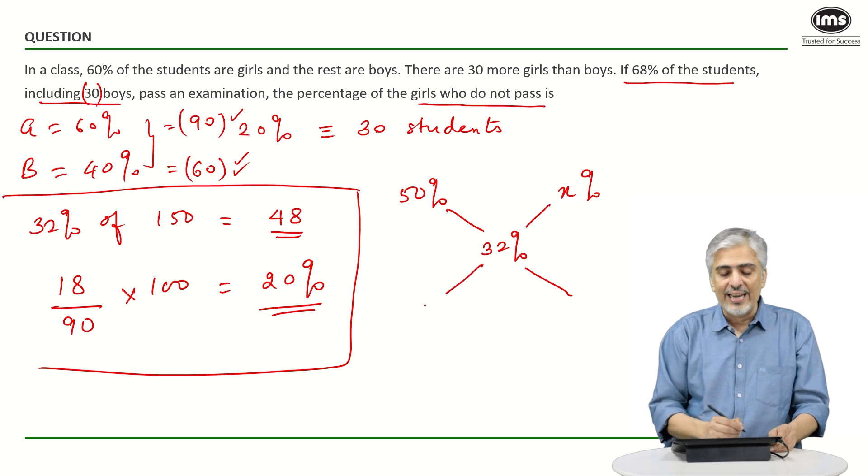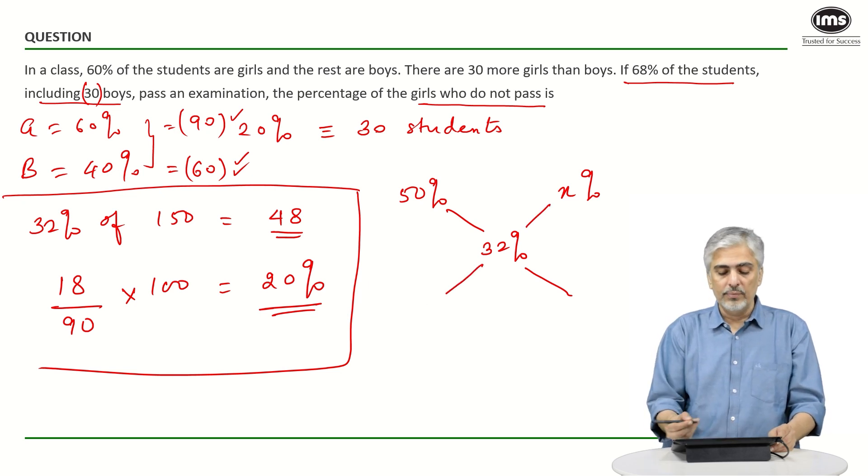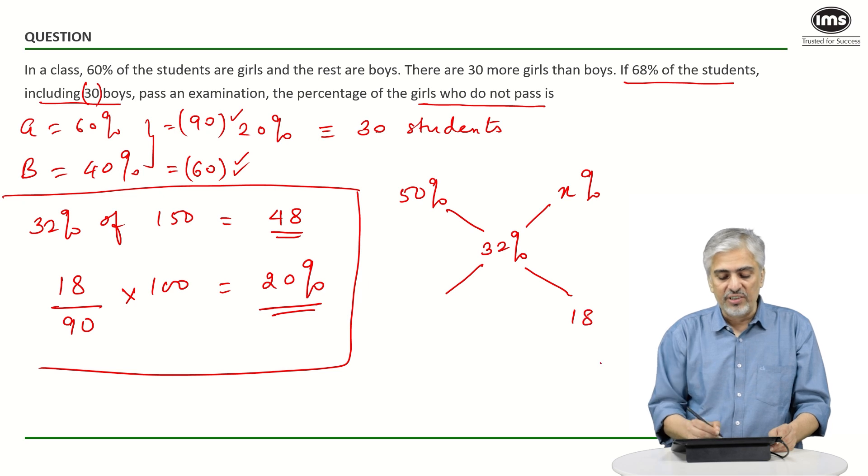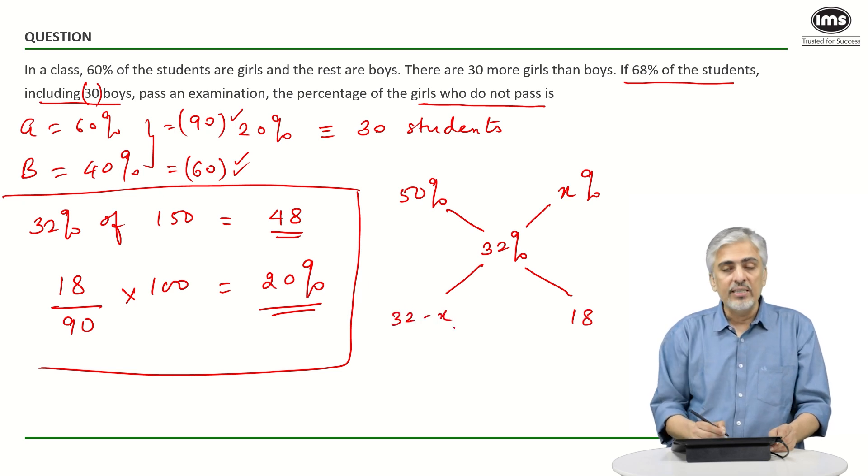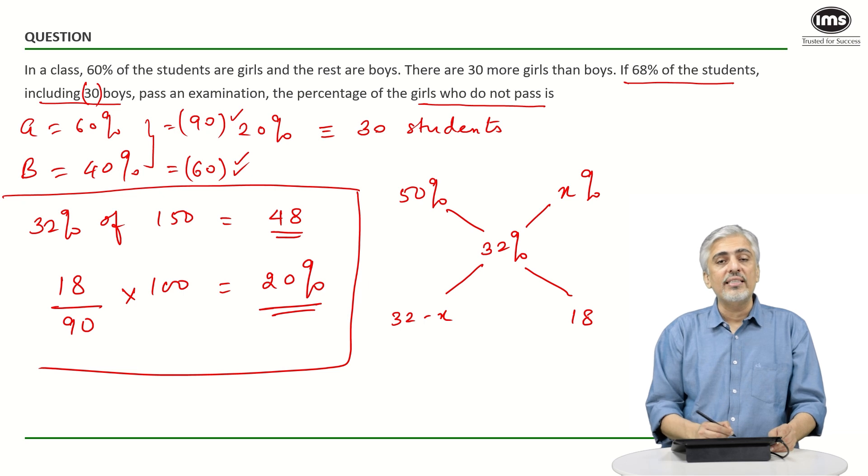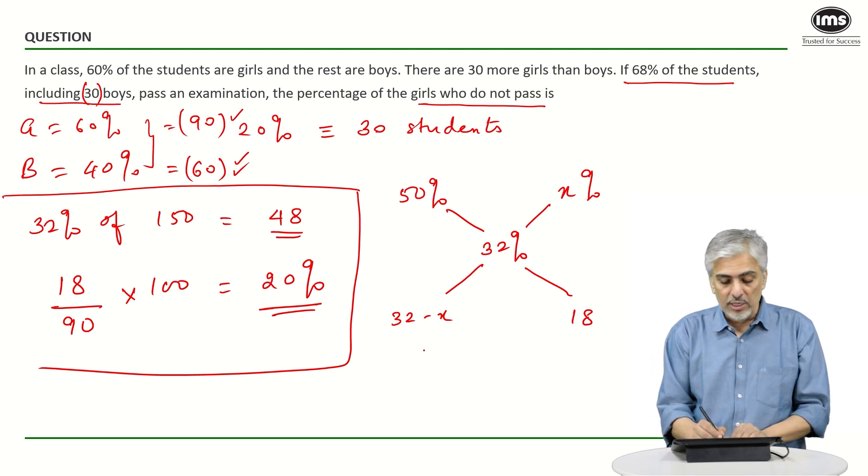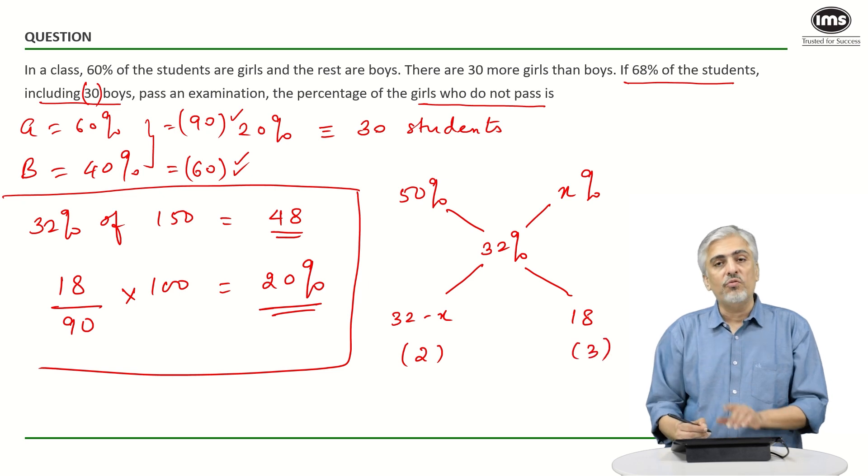If I was using allegation, I know x has to be less than 32. This will be 18 (50 minus 32), and this will be 32 minus x. The ratio among boys and girls was 2 is to 3. So if 3 parts is 18, how much is 2 parts?